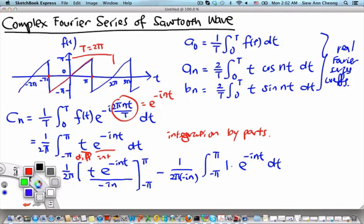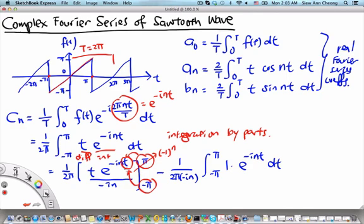We evaluate the boundary term by substituting the upper limit pi to get e^(minus i n pi), which equals (minus 1)^n. Substituting the lower limit minus pi also gives (minus 1)^n. Because of the factor t, the first substitution gives pi times (minus 1)^n and the second gives plus pi times (minus 1)^n. So the boundary term equals 1 over 2pi times 2pi times (minus 1)^n, which simplifies to just (minus 1)^n.